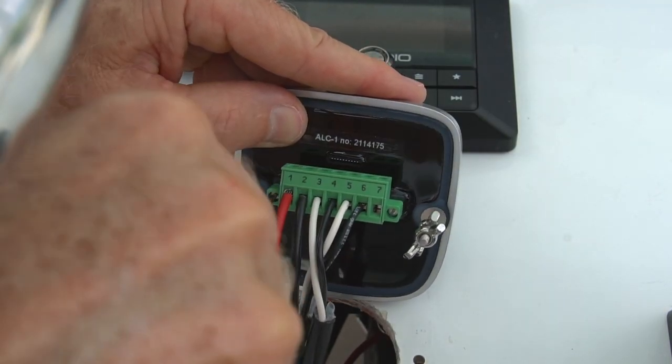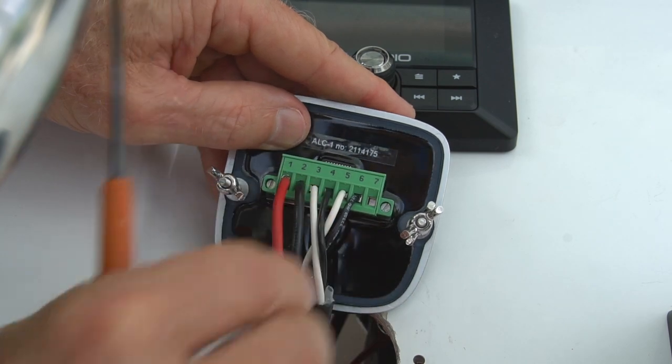Power it up to make sure everything works correctly and then install it in the dash with the included two thumb nuts on the back side.